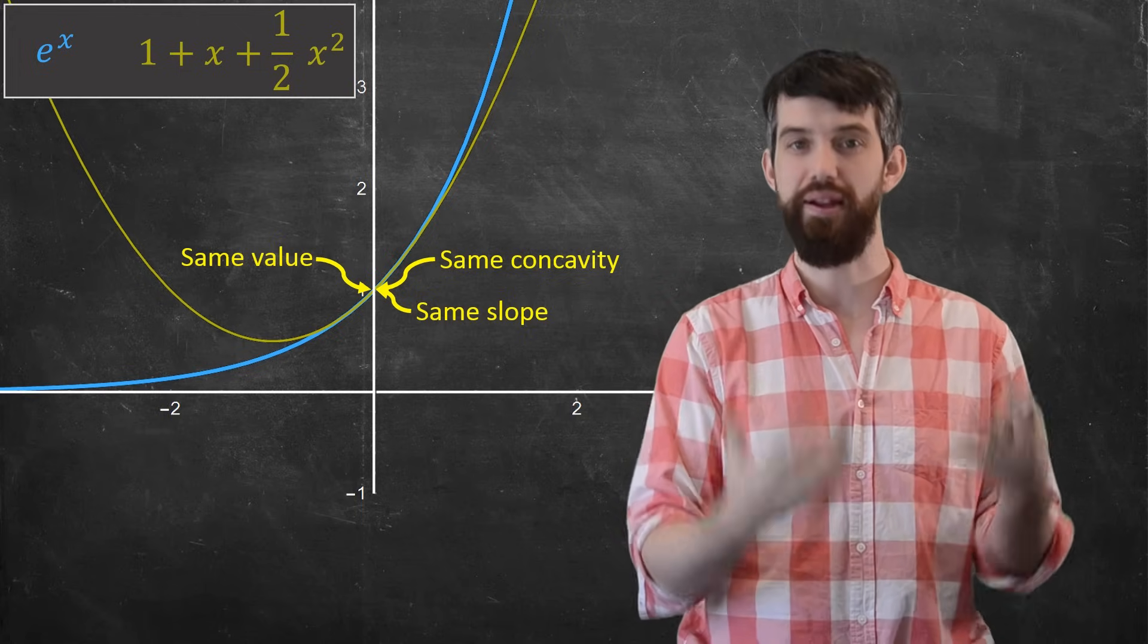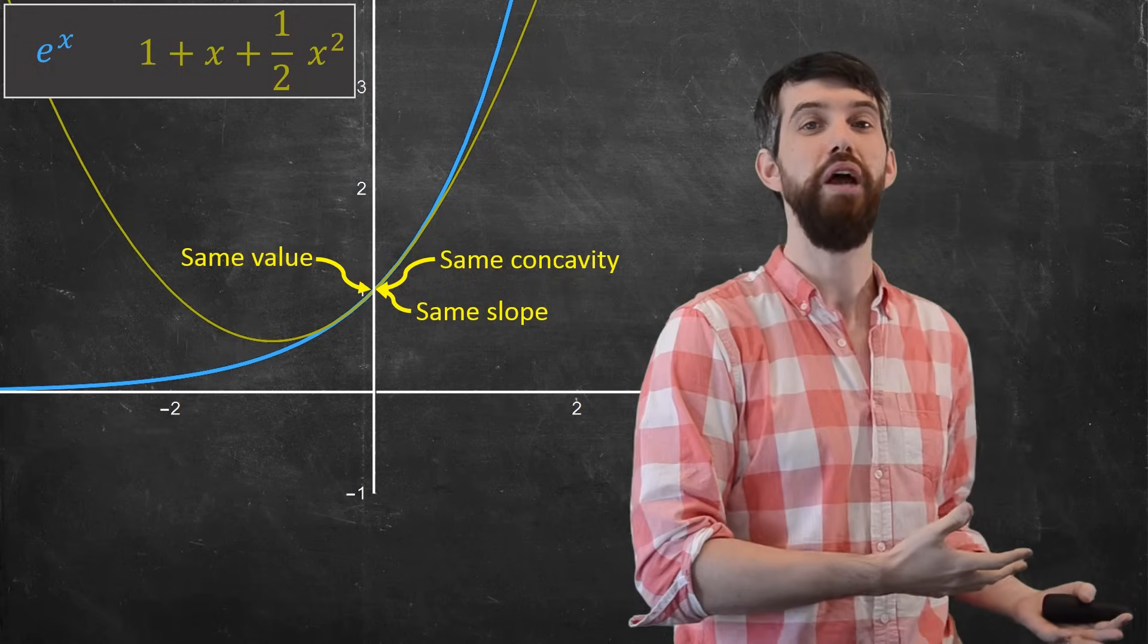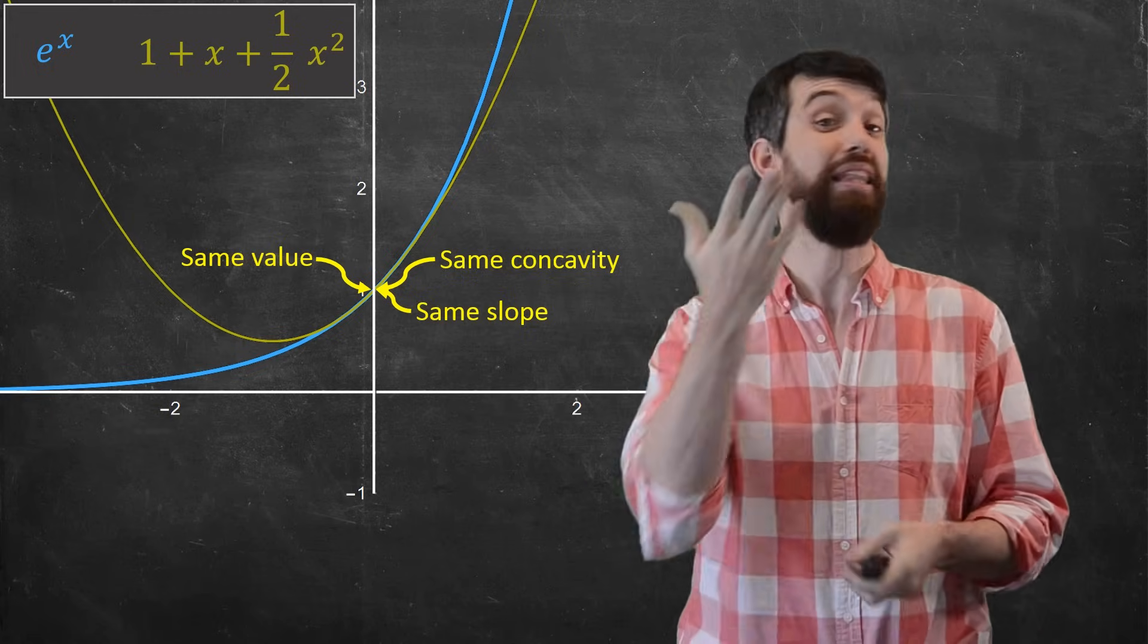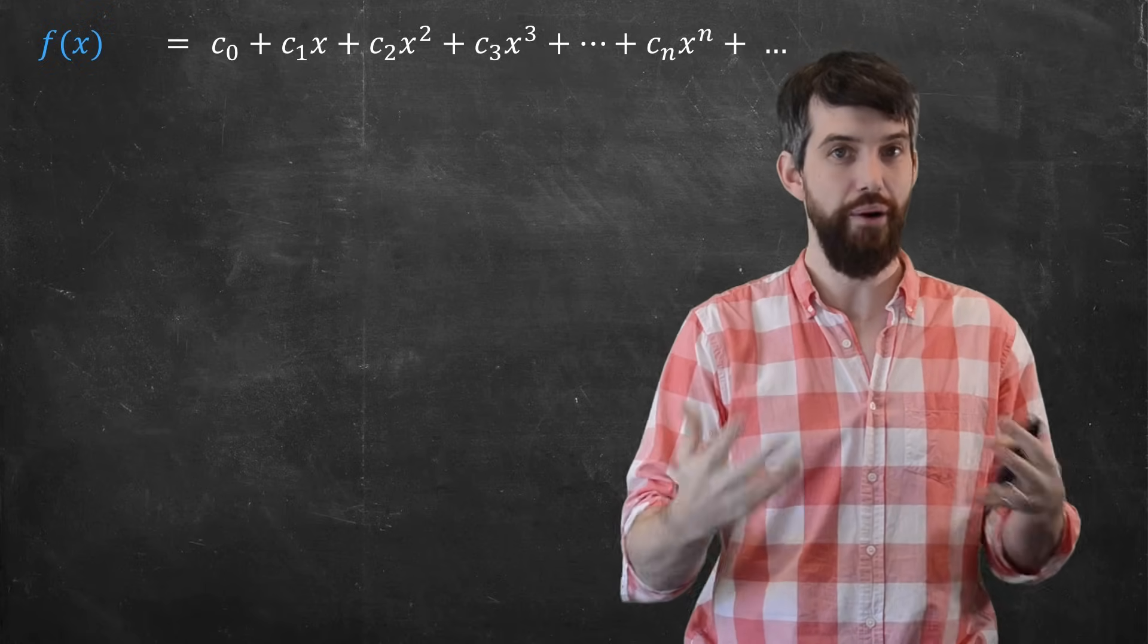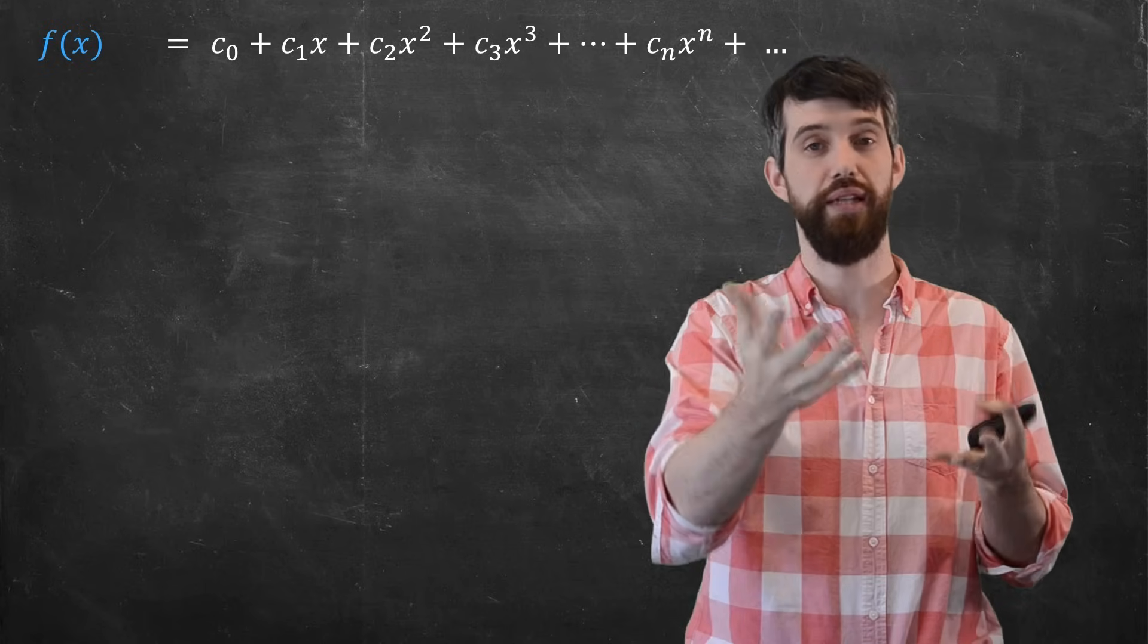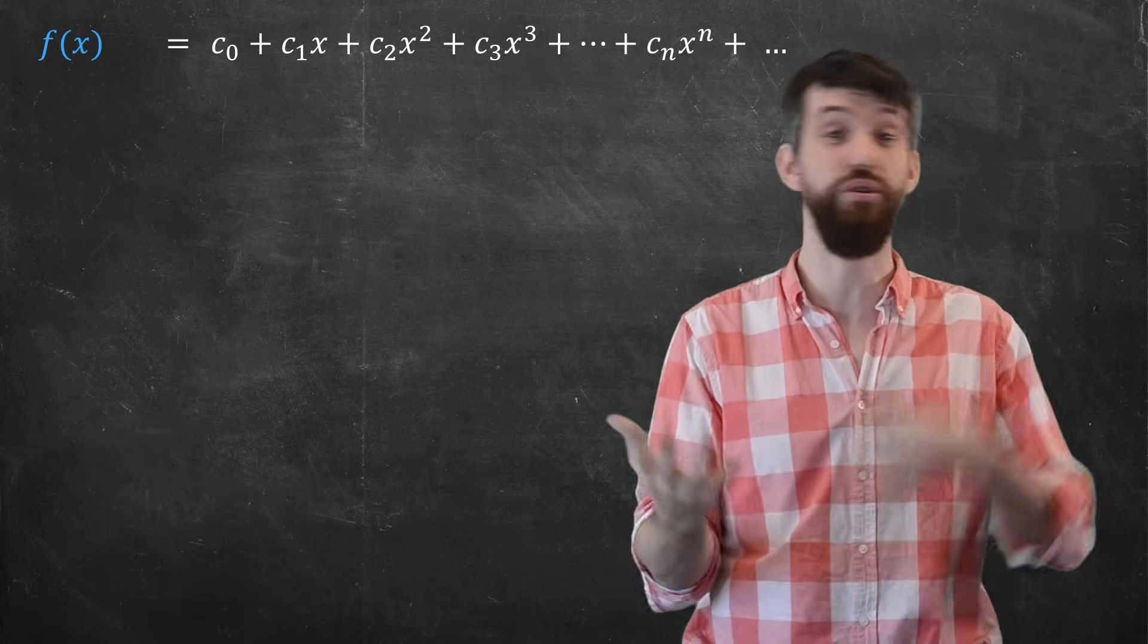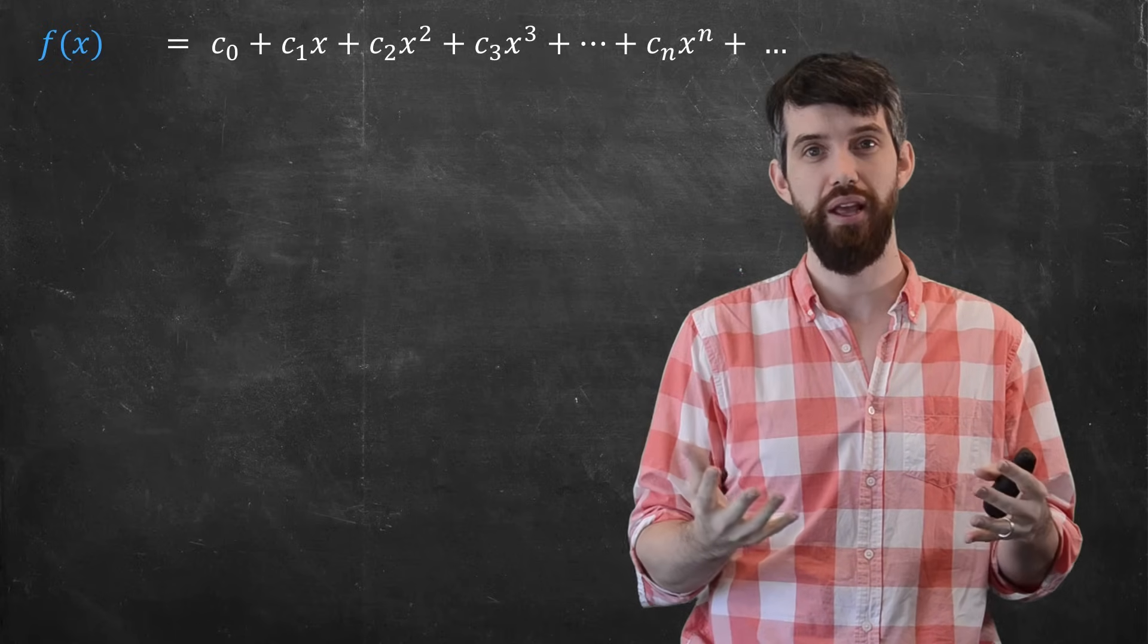This is how I did it for e to the x. But let's take that idea and let's generalize it. Let's do it for all functions, at least functions that have power series. That is, I take a generic f of x and I set it equal to a power series and say that this converges for some radius. And the question is, what are the coefficients? What are the c0, the c1, and so on?